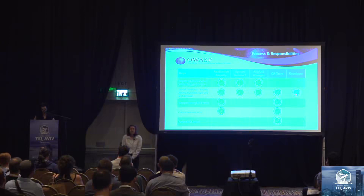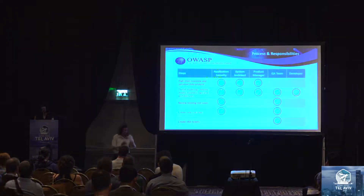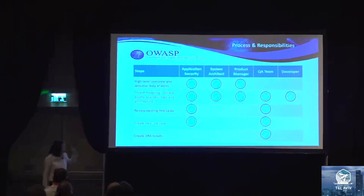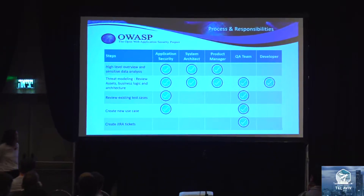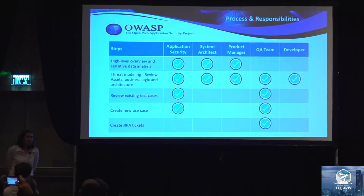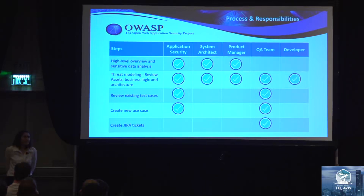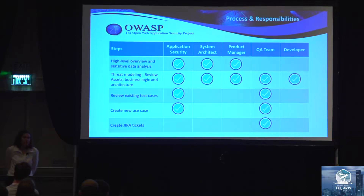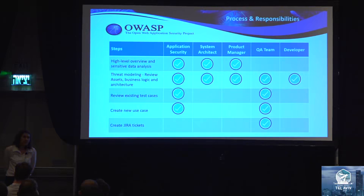This is the actual process for system-level workflow. In the first step, the application security person works with the system architect or product manager to review the system features, the high-level overview, and the sensitive data. If the system contains sensitive data or sensitive functionality, then there is real reason to do security testing. Otherwise, there's no point. If it's relevant, then in the second phase, the application security person does the threat modeling, data analysis, architecture, and business logic review, trying to think about relevant use cases.